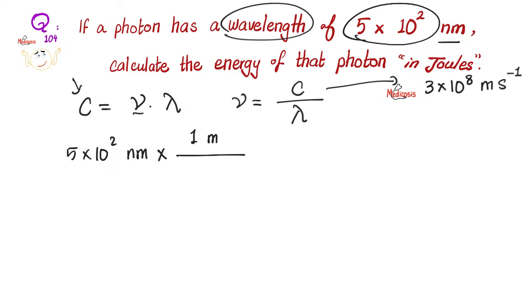So 5 times 10 raised to the second power nanometers multiplied by my conversion factor. I know that one meter contains 10 raised to the ninth power nanometers. Nanometer will cancel with the nanometer and the rest is math history.